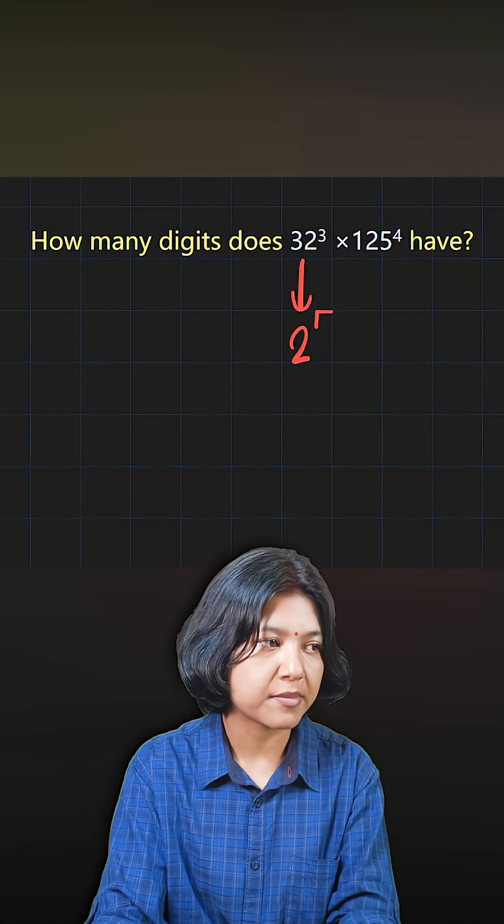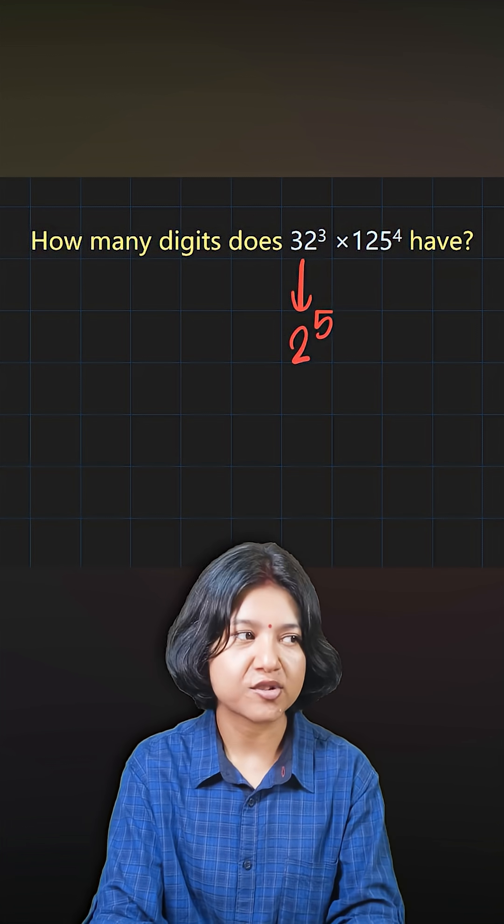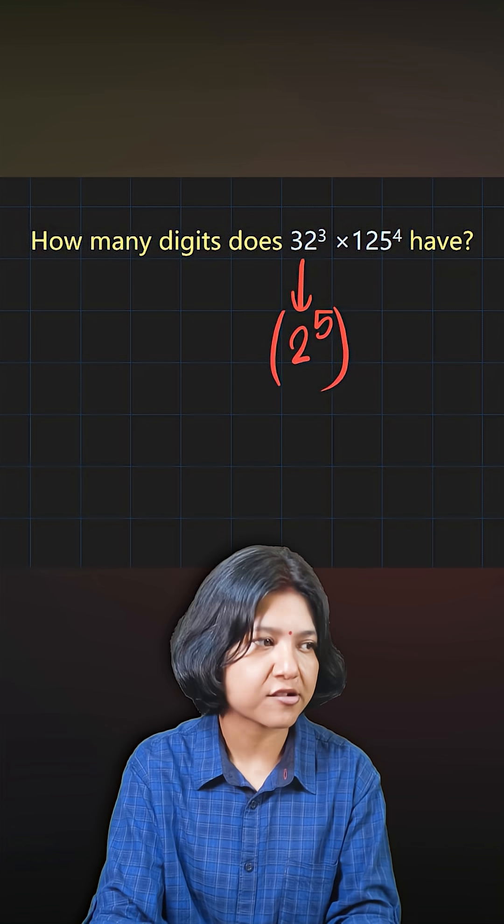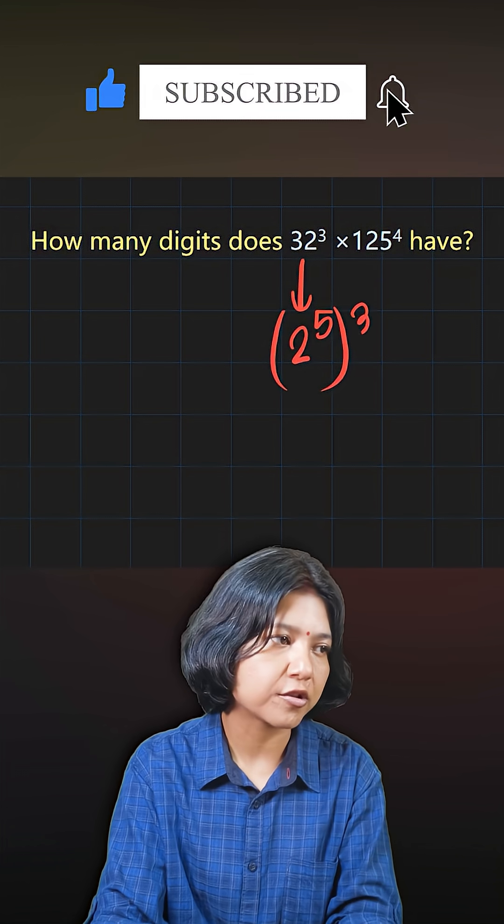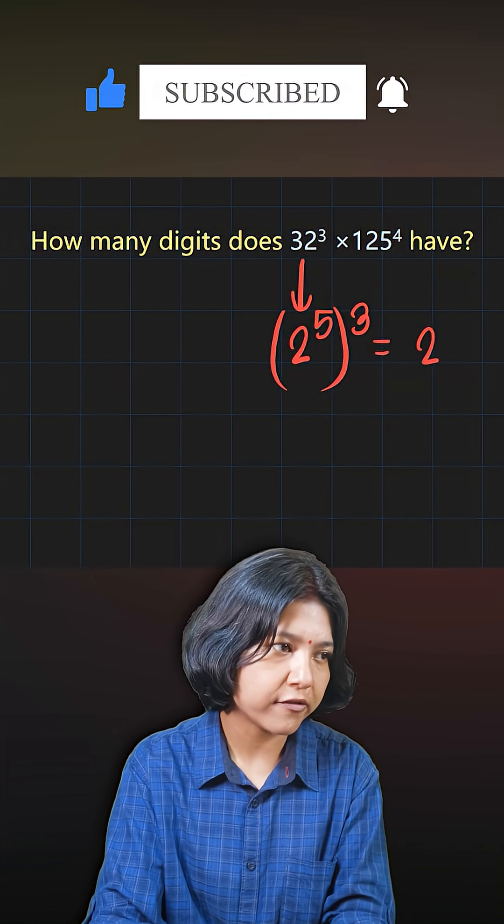You will see that 2 appears for 5 times or 2 multiplies for 5 times to give you 32. So I'm going to write this as 2 to the power of 5 whole 3, which gives me 2 to the power of 15.